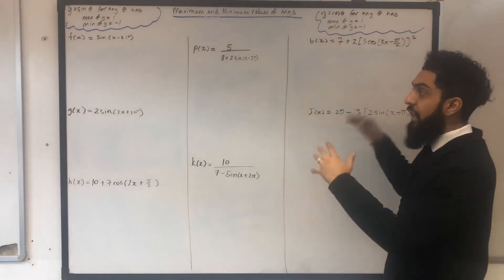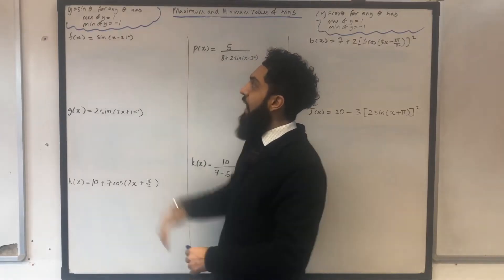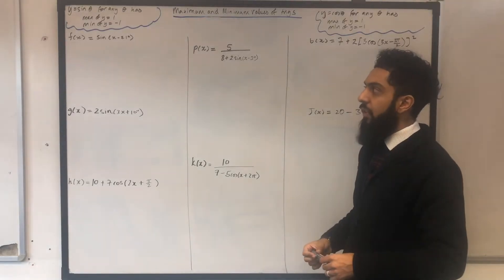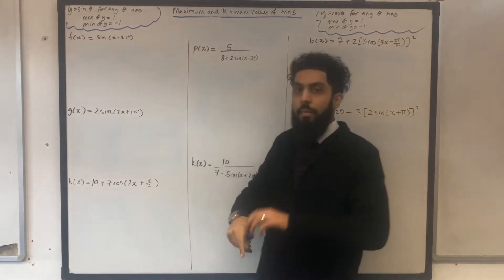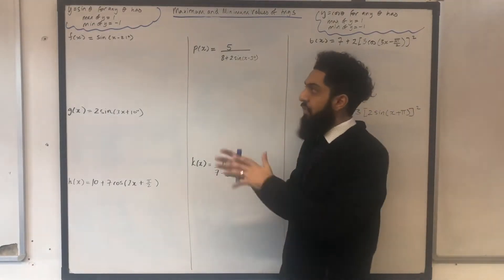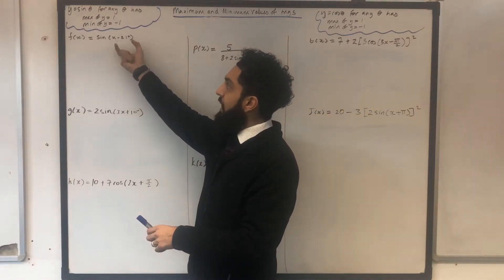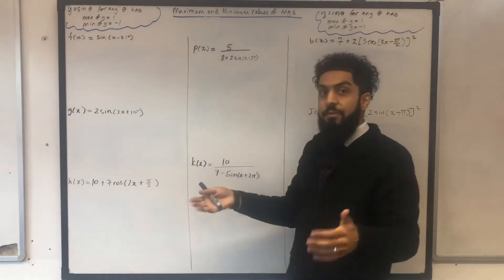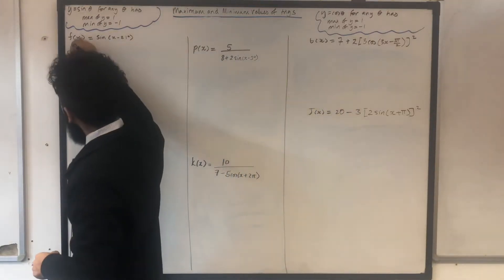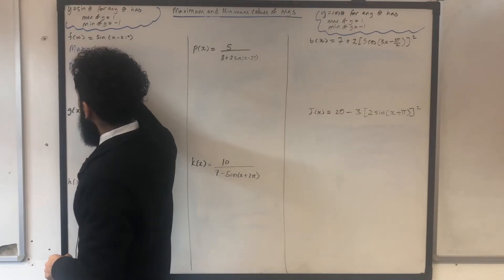We're going to be putting these two statements into action. This function over here: f of x equals sine in bracket x minus 21 degrees. I want to work out the maximum value of that particular function. Going back to the statement, no matter what theta is, y equals sine theta will have a maximum value of 1. The theta here represents x minus 21 degrees — the angle can change, but the maximum and minimum remain the same. So the maximum of this function is 1, and the minimum is minus 1.